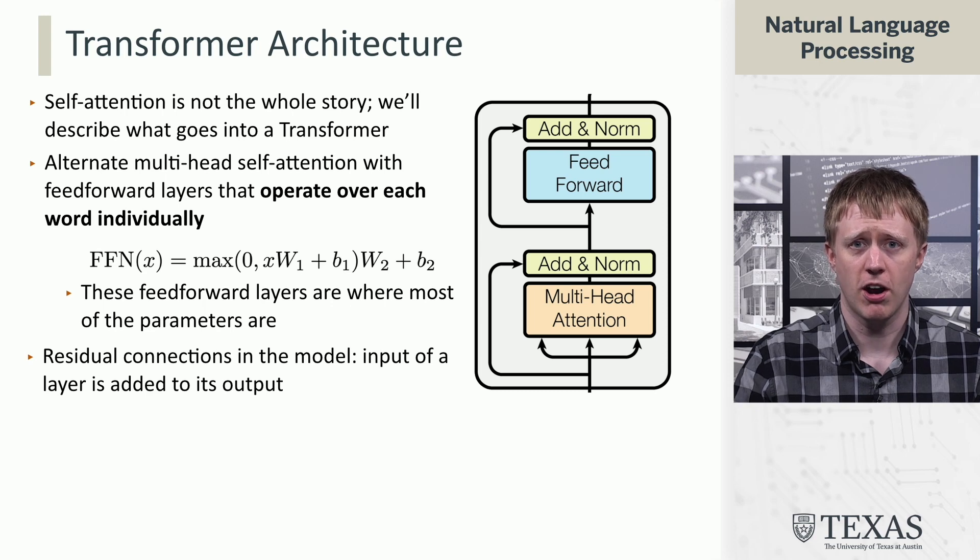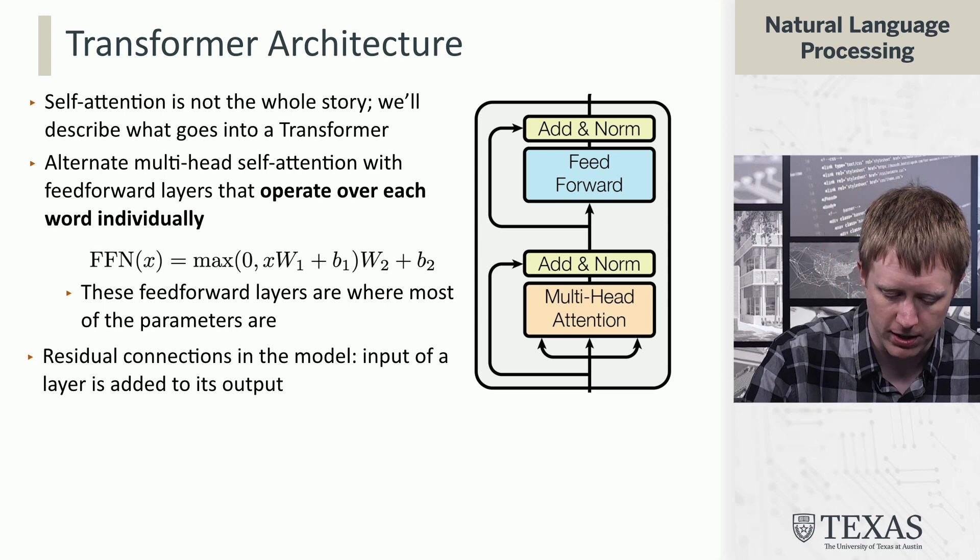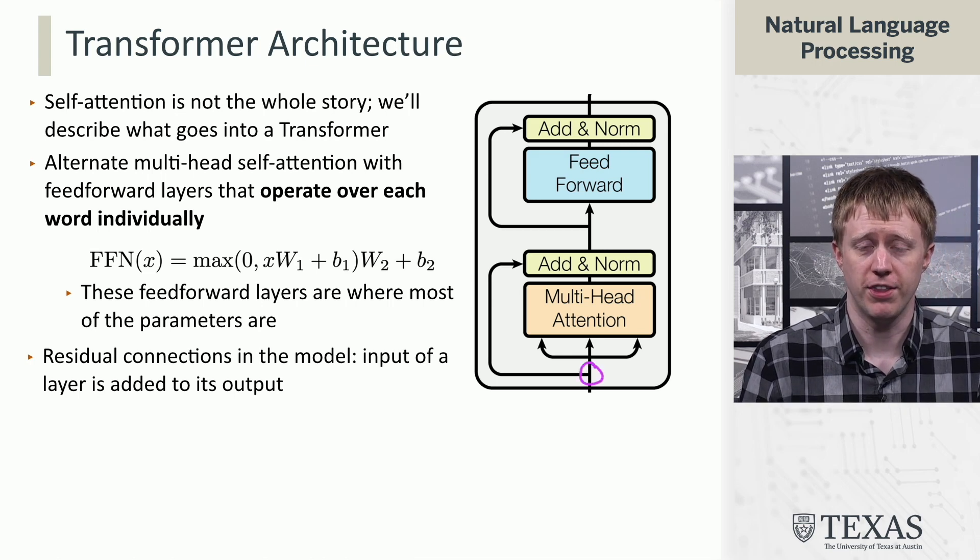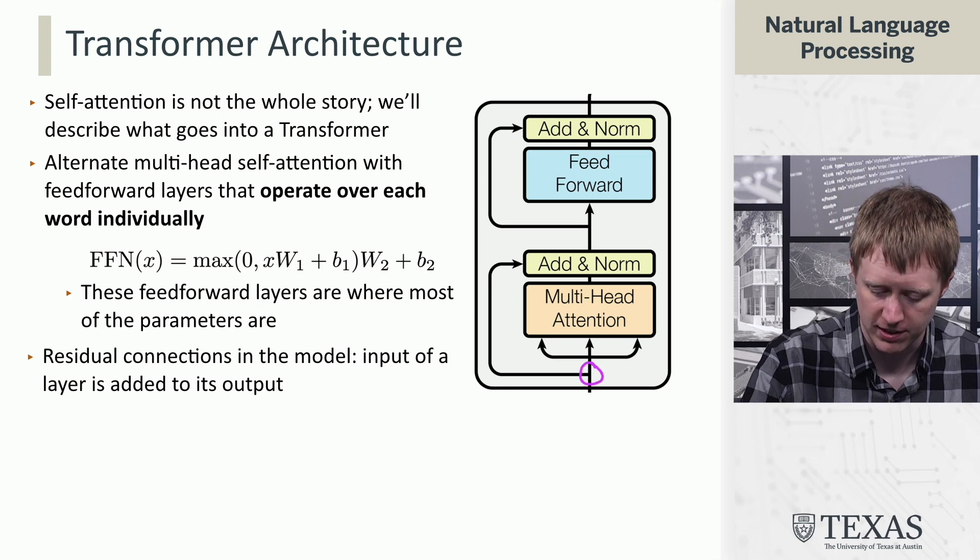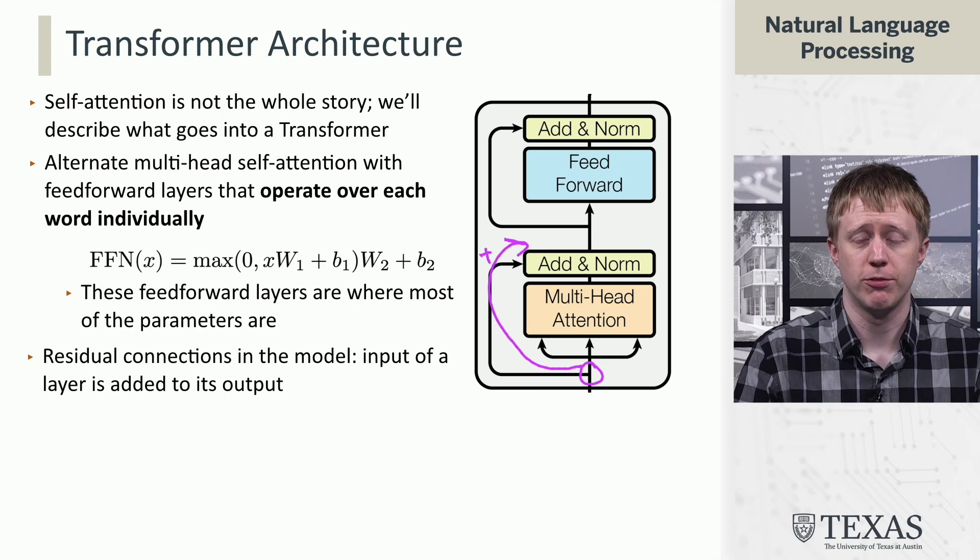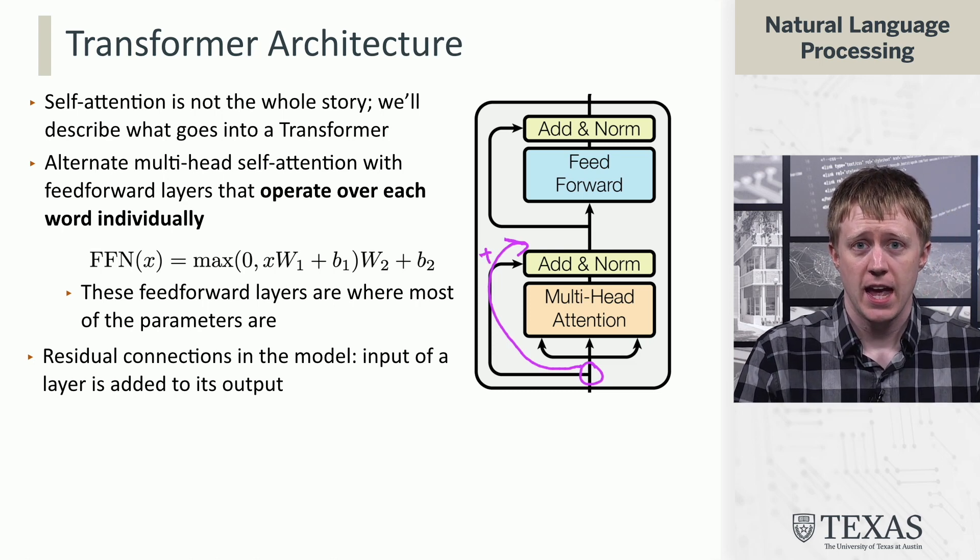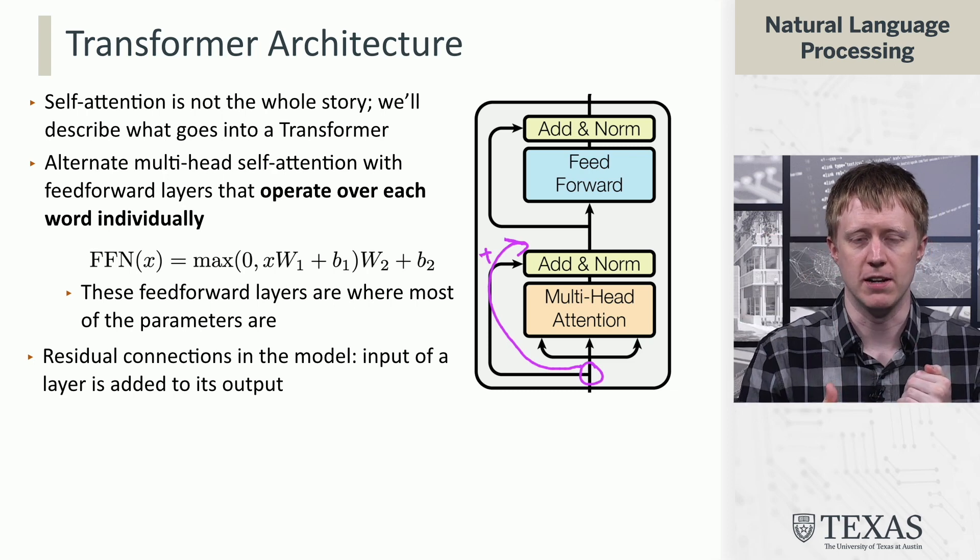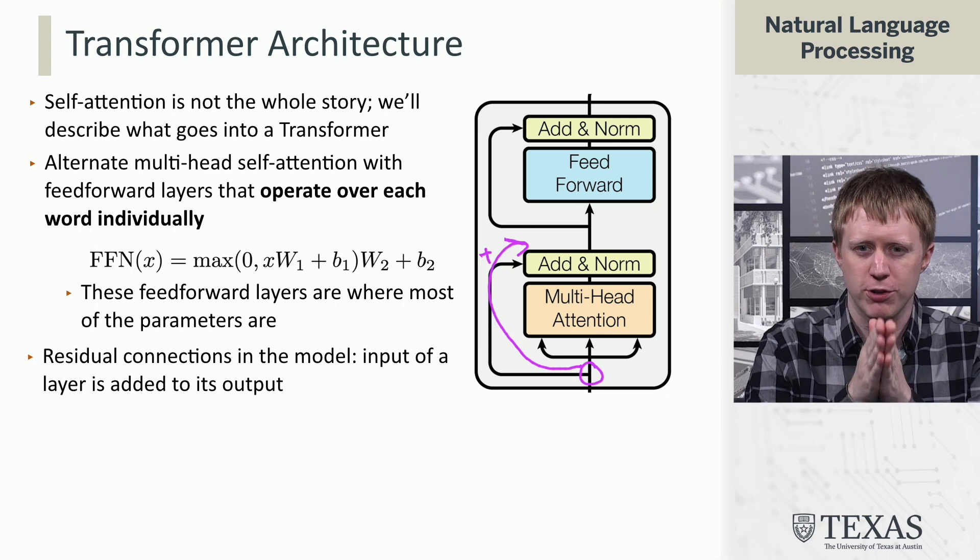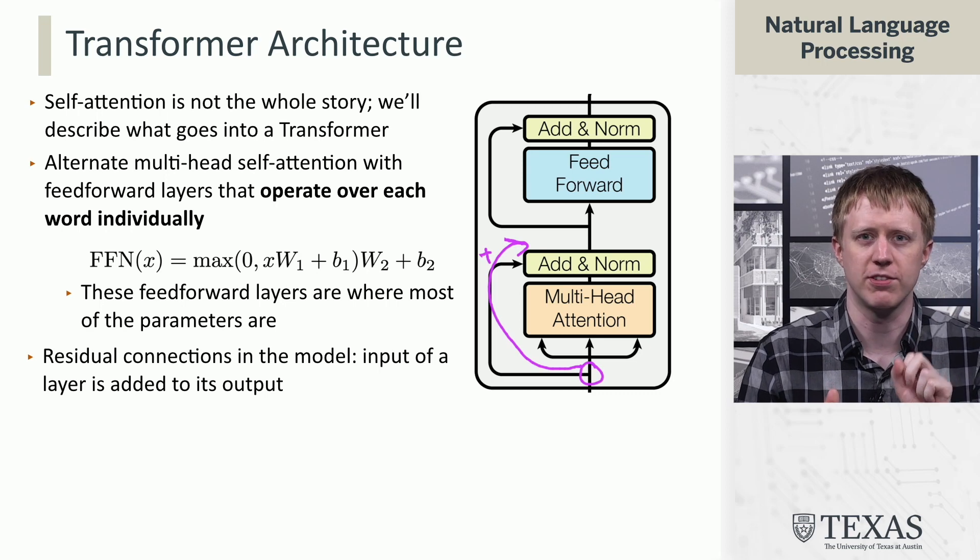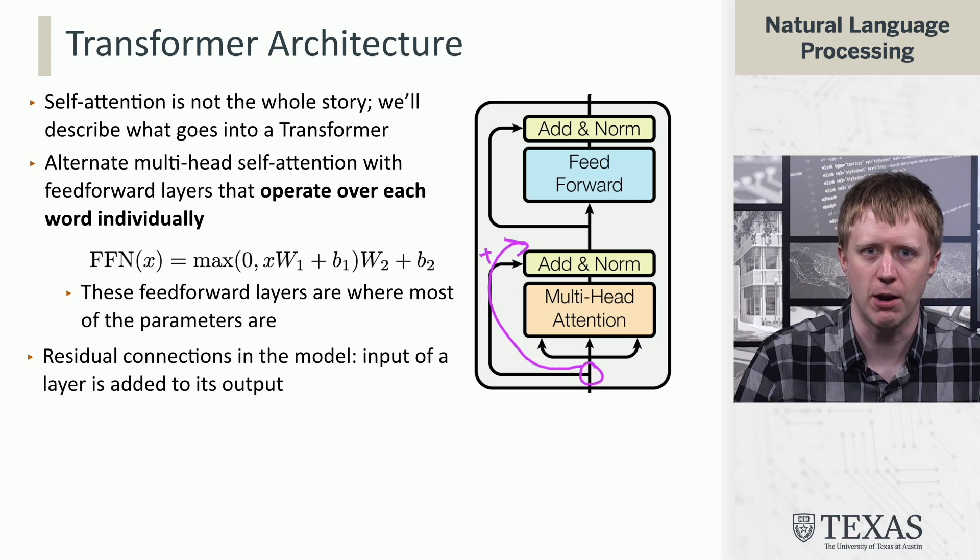The arrows are reflecting residual connections in the model, which basically say we are going to take the input to the model that's given to the multi-head attention mechanism, and we're going to add it to the output from this mechanism. And this is a trick that's used in training deep neural networks to enable gradients to flow more easily between the output and the input because you don't actually want the model to have to use every layer, so you provide these residual shortcuts where it can skip the layers, and the way you do that is by adding the inputs and the outputs.